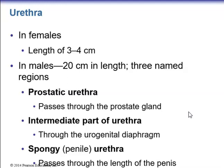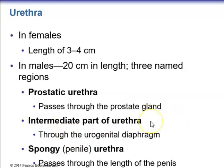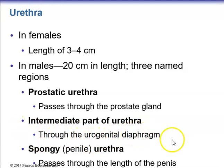In males, the urethra is about 20 cm long and has three named regions: the prostatic urethra, which passes through the prostate gland; the intermediate or membranous part, which passes through the urogenital diaphragm between the prostate and the corpus spongiosum; and the spongy penile urethra, which runs through the corpus spongiosum along the length of the penis.